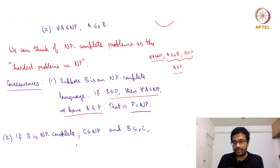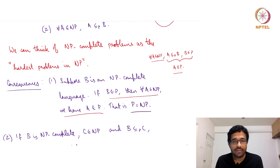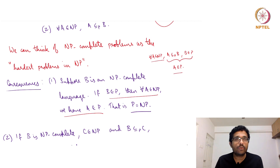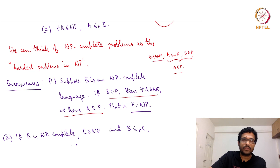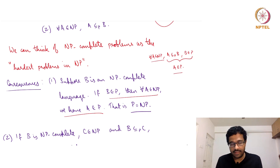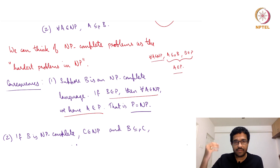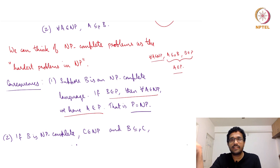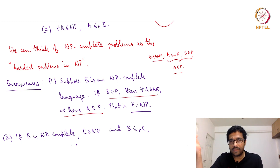This is the intuition for why we call them the hardest problems — NP-complete languages — because if any of these has a polynomial time solution, then we have shown that P equals NP. There are multiple NP-complete problems known: SAT, 3SAT, clique, vertex cover, independent set, subset sum, integer linear programming, and many, many such problems.